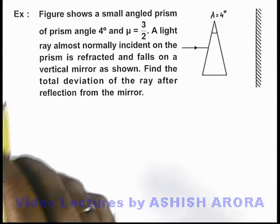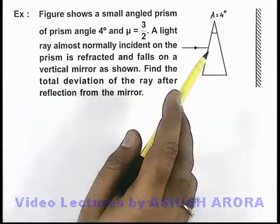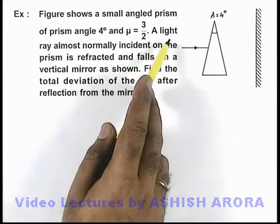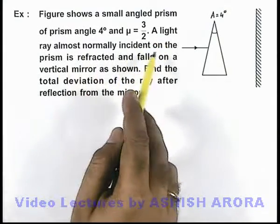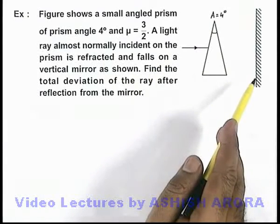In this example, we are given that the figure shows a small angle prism of prism angle 4 degrees with refractive index 3/2. A light ray almost normally incident on the prism is refracted and falls on a vertical mirror as we can see in the figure.